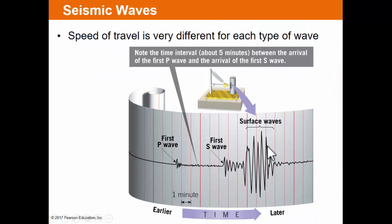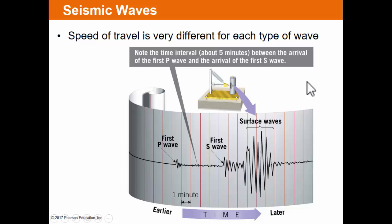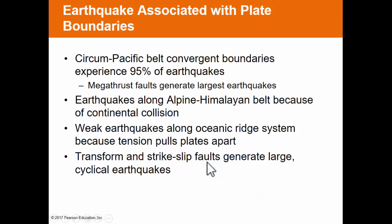The speed of travel is very different for each type of wave. The time interval between the first P wave, S wave, and surface waves is very important. Imagine two cars starting in Los Angeles — one at 100 mph and one at 50 mph. We know the first car gets there first, but the distance between them increases. By El Paso the gap might be 100 miles; by Houston, 250 miles; by Tallahassee, 500 miles. The further a seismograph is from the epicenter, the larger the time interval — and that's the key to how we determine where earthquakes occur.